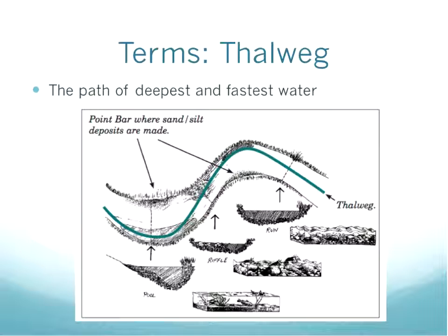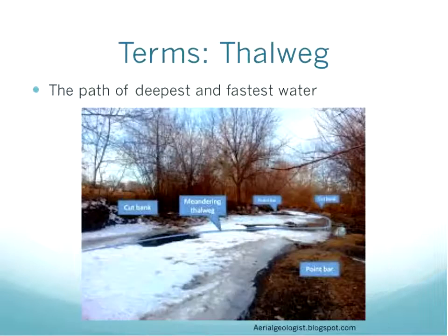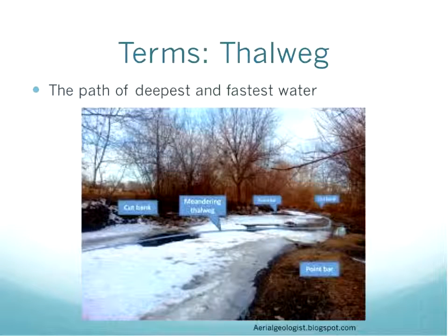A new term introduced in the updated habitat assessment methods is the thalweg — the path of the deepest and fastest water in the stream. If you kayak, you probably follow the thalweg. It runs on the outside of bends and then crosses toward the center on straight sections. You can often see the thalweg from shore. There's also a winter photo example where the open water reveals the thalweg line clearly, as that's where the deepest and fastest flow keeps the stream from freezing.